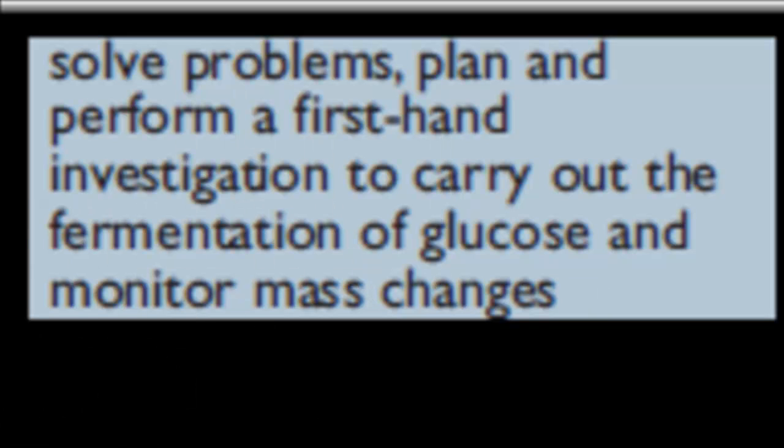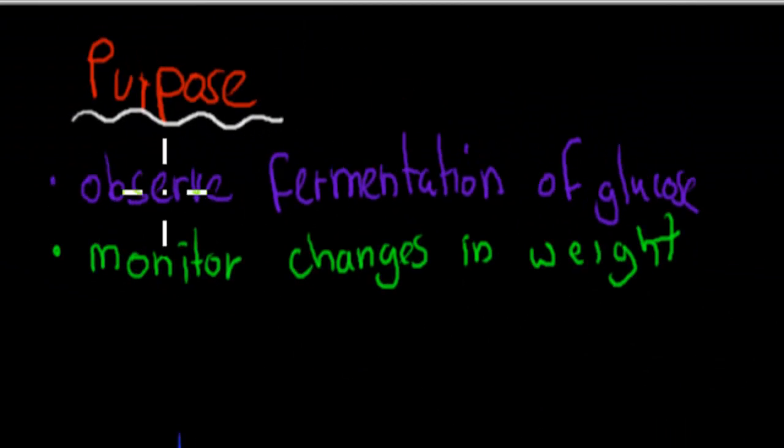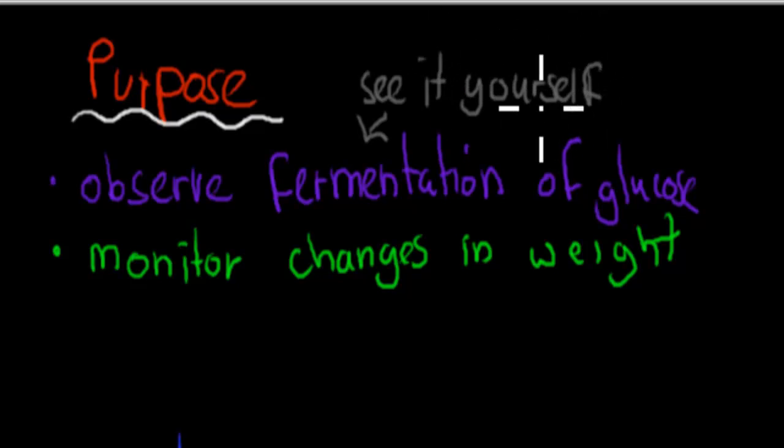So there's two parts. First we had to carry out the fermentation, and also we had to monitor mass changes. The purpose was to observe the fermentation of glucose, and one of the reasons why is because it's always to sort of see it yourself. It helps to visualize it by being able to do experiments. It's a hands-on kind of thing, and we talk about fermentation quite a bit in this chapter.